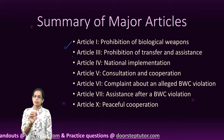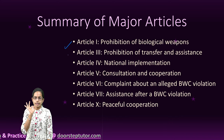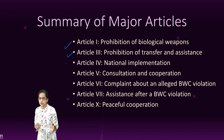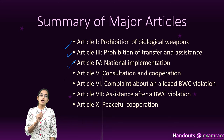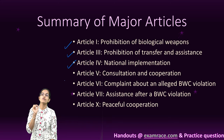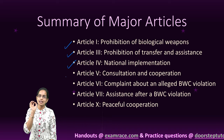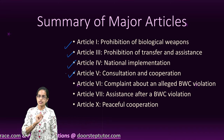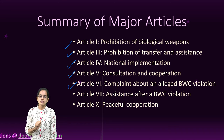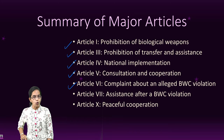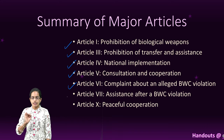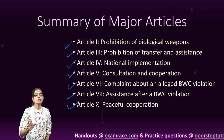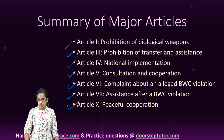Article 1 talks about prohibiting any kind of biological weapon. Article 3 talks about prohibiting the transfer of these biological weapons. Article 4 talks about nationwide implementation of programs to understand and manage this. Article 5 talks about cooperation among member nations and proper consultation. Article 6 talks about complaints about violation of this convention. Article 7 talks about assistance once a violation has been done. Article 10 talks about peaceful cooperation.